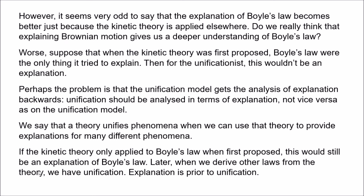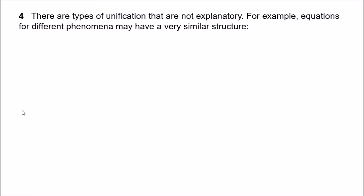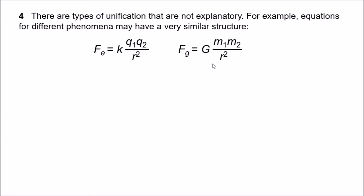A final problem is that unification in science occurs in many different ways, and not all forms of unification seem to have any real relation to explanation. For example, we might apply similar equations to different phenomena. Consider how Coulomb's law for electrostatic attraction and repulsion is structurally very similar to Newton's law of universal gravitation. Each has different constants — K in Coulomb's law and G in Newton's law — and whereas Newton's law only describes attractive forces, Coulomb's law concerns both attractive and repulsive forces. Nevertheless, the mathematics is very similar; both are inverse square laws.